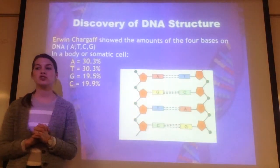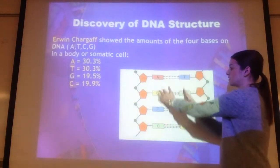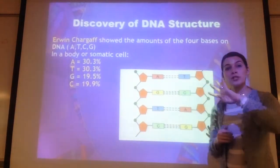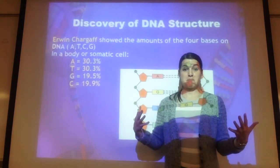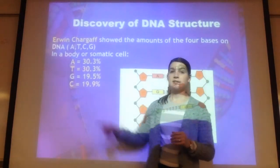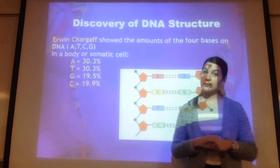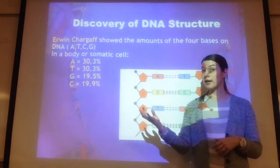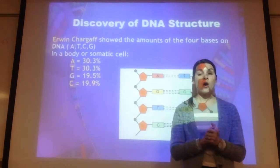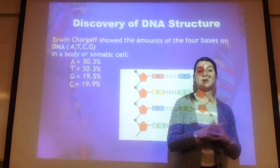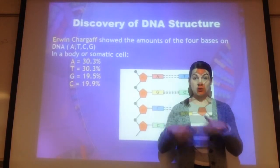Another person we need to know about is Erwin Chargaff. He looked at the actual components of DNA and found four different kinds of bases. He found that adenine and thymine are always in the same amount, and guanine and cytosine are always in the same amount. This gave us Chargaff's Rules: A always equals T, and G always equals C. So if you're given a percentage of adenine, you can always get the percentage of thymine, and then calculate guanine and cytosine, keeping in mind the total must equal 100.